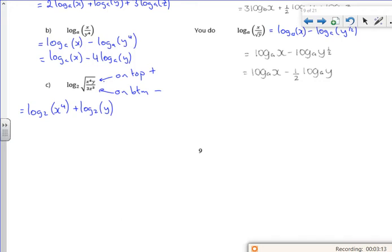On the bottom, because you divide them by the 3 z cubed. So the 3 gets 1 log to base 2 of 3. And the z is z cubed.